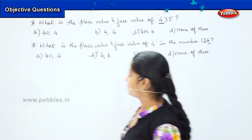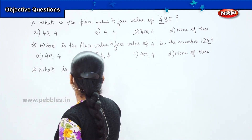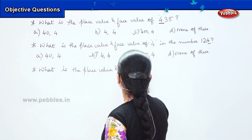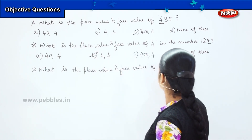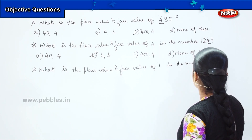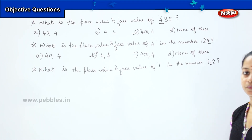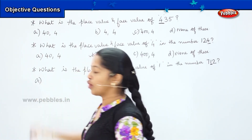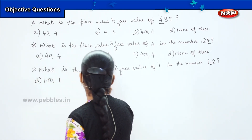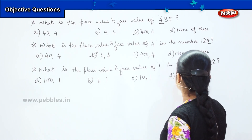Here is my next question. What is the place value and the face value of 1 in the number 712? My options are: option A — 100 and 1; option B — 1 and 1; option C — 10 and 1; and option D — all of these.